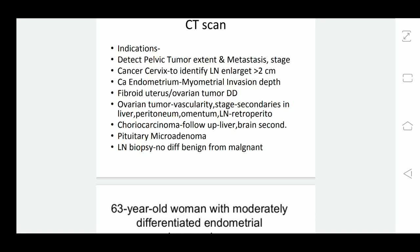In patients with ovarian tumor, CT scan can assess the vascularity of the tumor — whether vascularity is normal or new vascularization is present, which would point to malignancy. Staging of ovarian tumor can also be done by noting secondaries in the liver, peritoneum, omentum, or retroperitoneal lymph nodes.